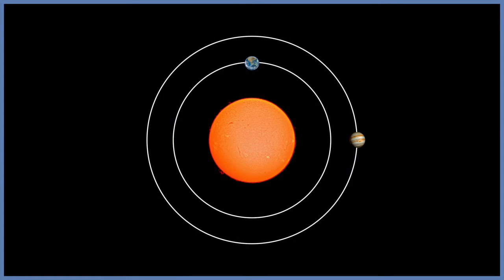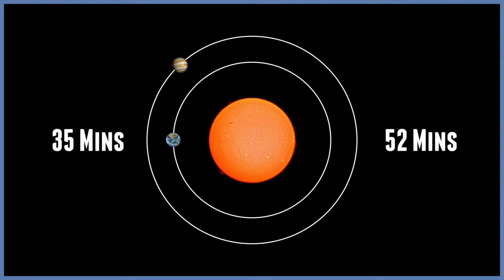The return trip to Earth can take 35 to 52 minutes, depending on which side we are relative to Jupiter's orbit.